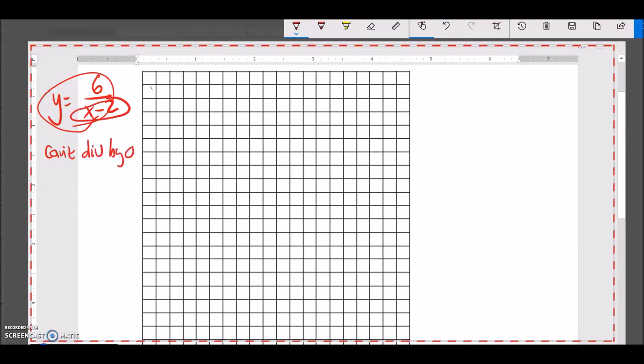So looking at that x minus 2, that denominator, when that is 0, x minus 2 equals 0, plus 2, plus 2, x equals 2. I have an asymptote there. I have a gap in the graph where I can't graph there.